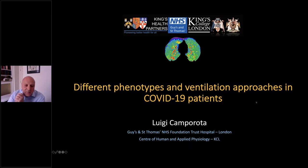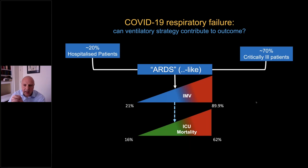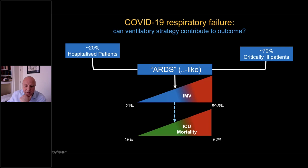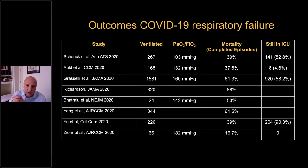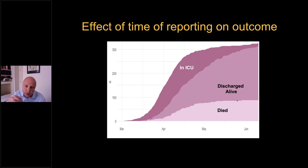I'll start with different phenotypes and ventilation approaches. One thing about epidemiology that is quite important is that about 20% of hospitalized patients and about 70% of critically ill patients with COVID-19 will develop an ARDS-like pathology. You can see from the data that the proportion of patients who then receive ventilation varies quite dramatically within the case series, and similarly the ICU mortality. I've put together all these studies I could find in the literature, and there is wide variability in mortality of completed episodes, also because some reports were published at different times during the pandemic.